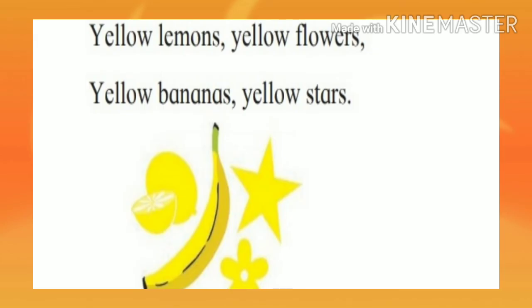Next, you see yellow lemons. Yellow means pure (yellow). Lemons are yellow — limbo (lemon) is pure. Yellow flowers — pure flowers. Yellow banana — keer (banana) is piwulia (yellow). Yellow stars — akashatil (sky's) stars are yellow. So: yellow lemons, yellow flowers, yellow bananas, yellow stars.